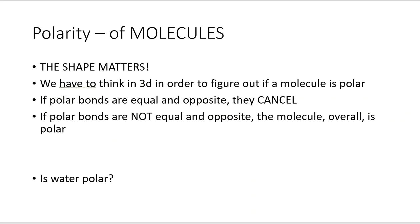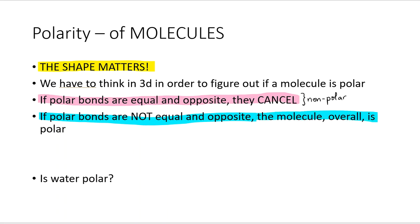Now we have to look at the molecule as a whole. Let's look at these polar bonds and see how they impact molecules. The most important thing about polarity of molecules is that shape matters. You have to think in three dimensions to figure out if a molecule is polar or nonpolar. If the polar bonds are equal and opposite, they cancel, which leads to a nonpolar situation. If the polar bonds are not equal and opposite, then the molecule overall is polar.